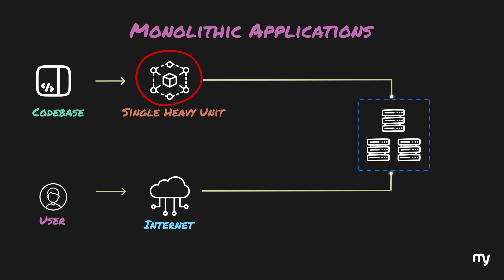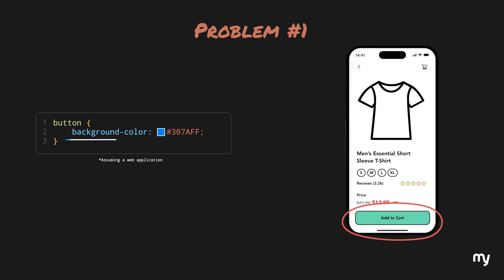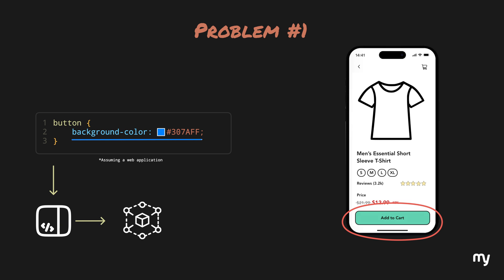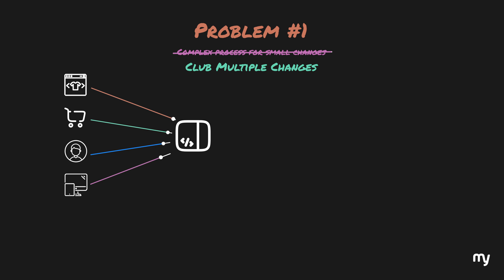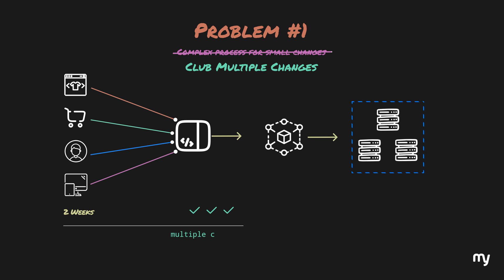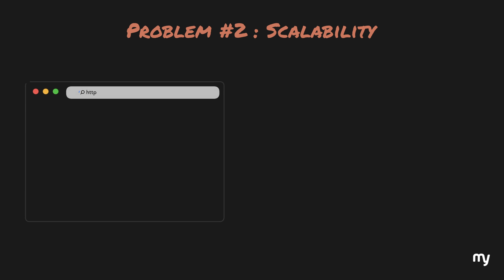Although the monolithic approach works, it comes with its own set of problems. Let's take the example of changing the color of a button — the code to do this could be a single line, but you'd have to repackage the whole codebase again into a new unit and deploy it. This process could be quite cumbersome for a small change. Therefore, a lot of organizations started clubbing changes from various modules over a period of, say, two weeks and deploying multiple changes altogether. This meant that the frequency of changes was quite low, and if something went wrong in one feature, the complete set of changes had to be rolled back, fixed, and redeployed.